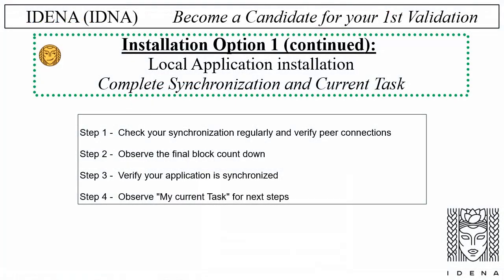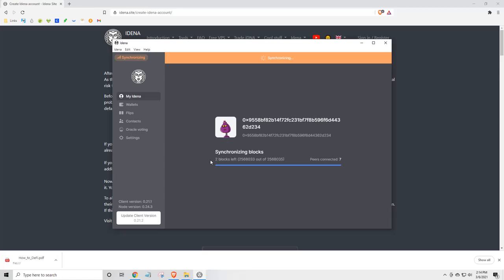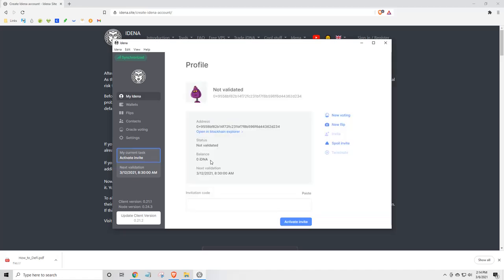Installation option 1, continued. Local application installation: complete synchronization and current task. Step 1: check your synchronization regularly and verify peer connections. Step 2: observe the final block countdown. Step 3: verify your application is synchronized. Step 4: observe my current task for next steps. Let's watch an example from our previous installation, about two and a half hours later.